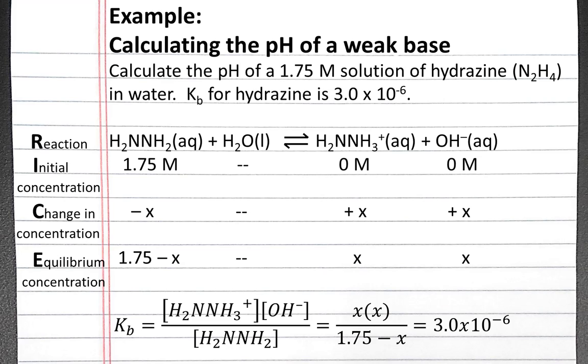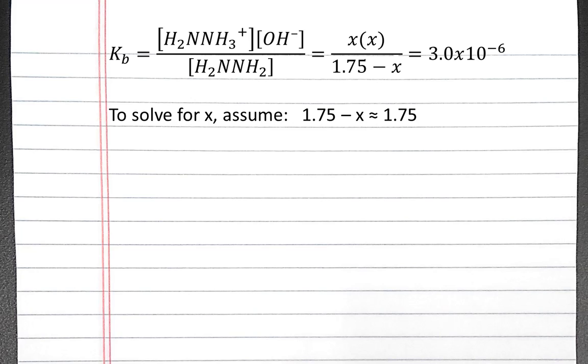So we can make an assumption that the change in concentration of hydrazine will be relatively small compared to the concentration of hydrazine. So our 1.75 minus x could be approximated to be 1.75. So we'll try to solve for x, making the assumption that 1.75 minus x is approximately equal to 1.75.